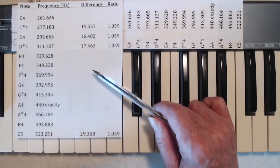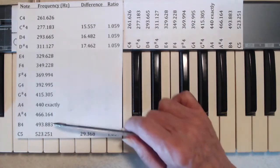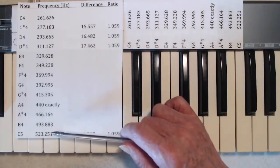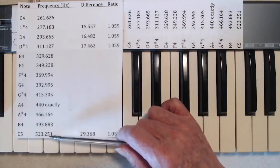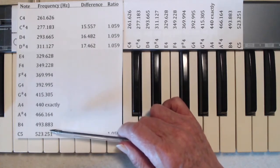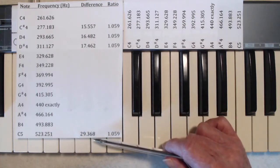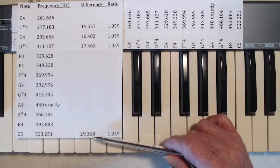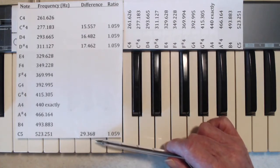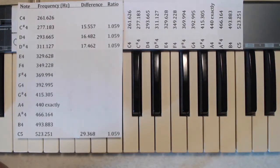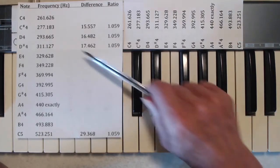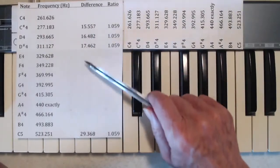And so on, all the way up to the last pair. That's the difference between the C5 and the B4. And that difference is 29.368 hertz. So the frequency difference is changing.